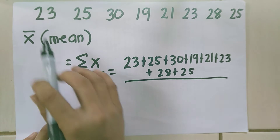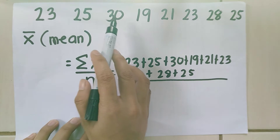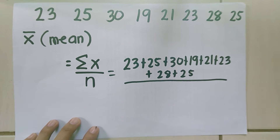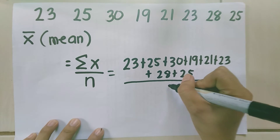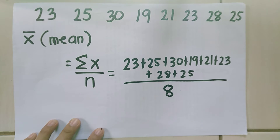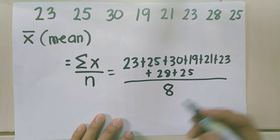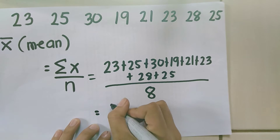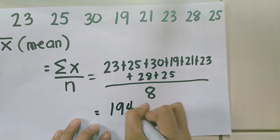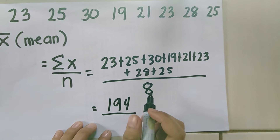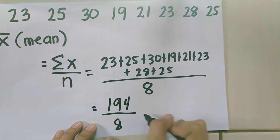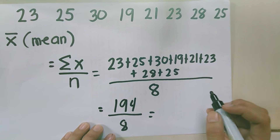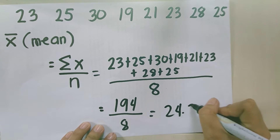Let's count how many data we have: 1, 2, 3, 4, 5, 6, 7, 8. So n is 8. When we add them all, this equals 194, divided by 8. 194 divided by 8 equals 24.25.